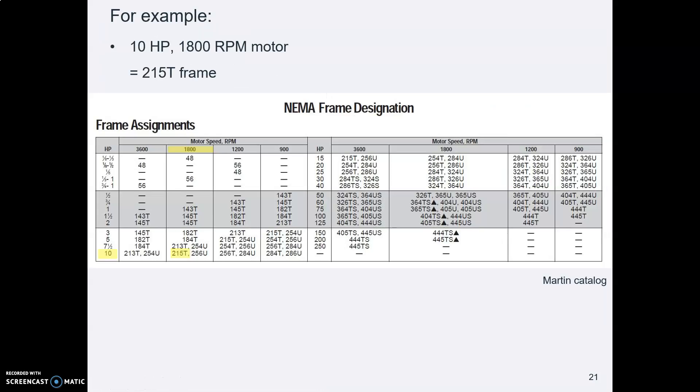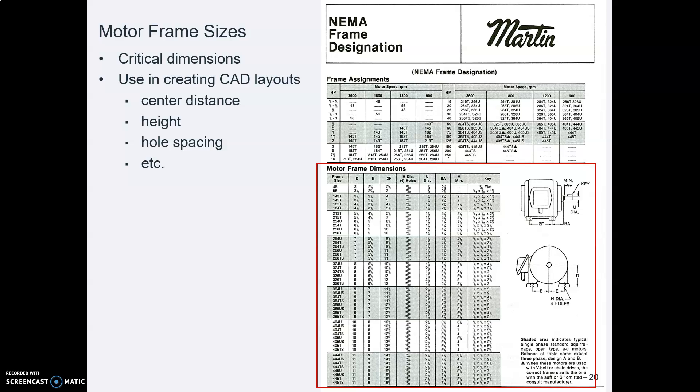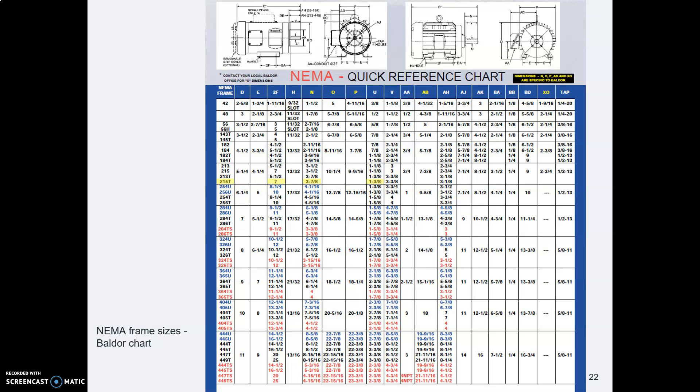So for example, here's our 10 horsepower, 1800 RPM motor with a 215T frame. Here's a different motor chart that you might find easier to read. I'm giving you this one, and this one, and this one in PDF handouts. So 215T frame size. Here are some dimensions from the picture up above, and all these dimension locations are labeled with letters of the alphabet.